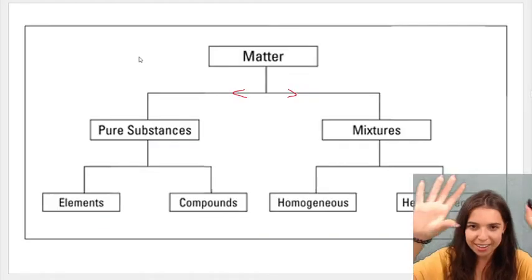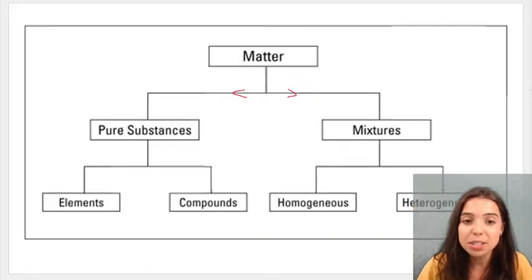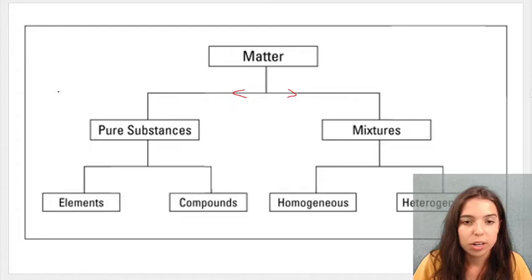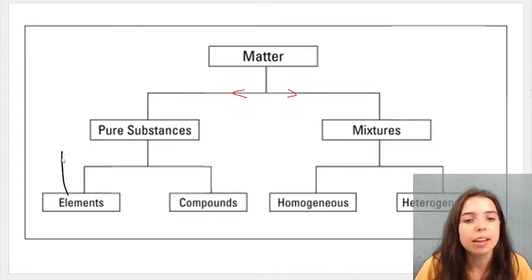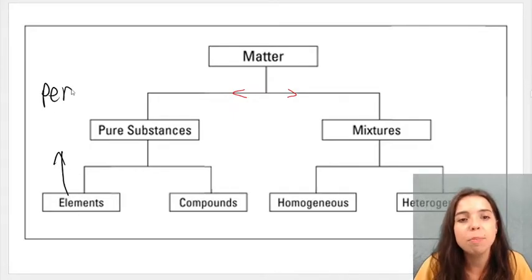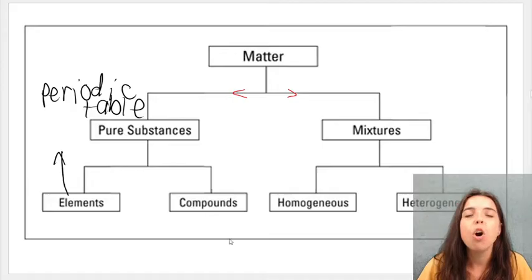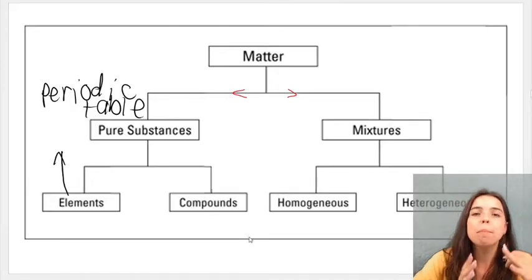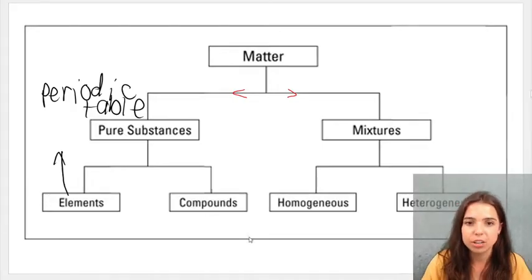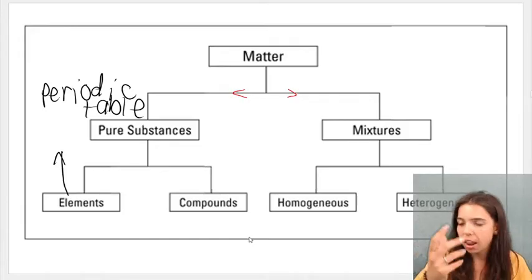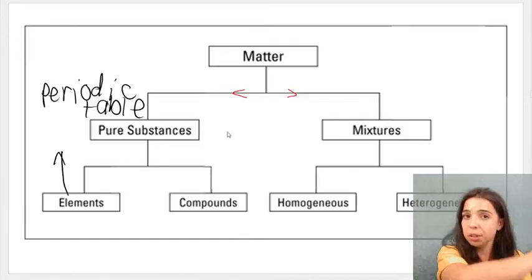So matter can be broken up into pure substances and mixtures. When I speak about pure substances, I'm speaking about elements, and these ones I can find on the periodic table, periodic table of elements. Compounds are made when elements combine together in a fixed ratio, like carbon dioxide, like water.